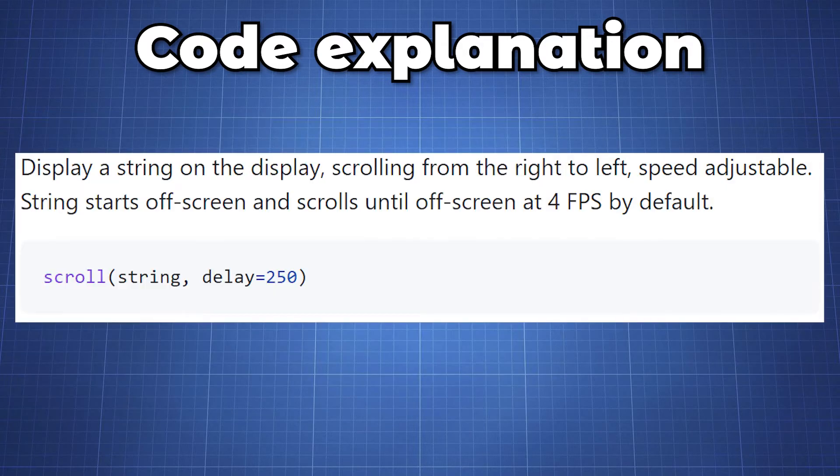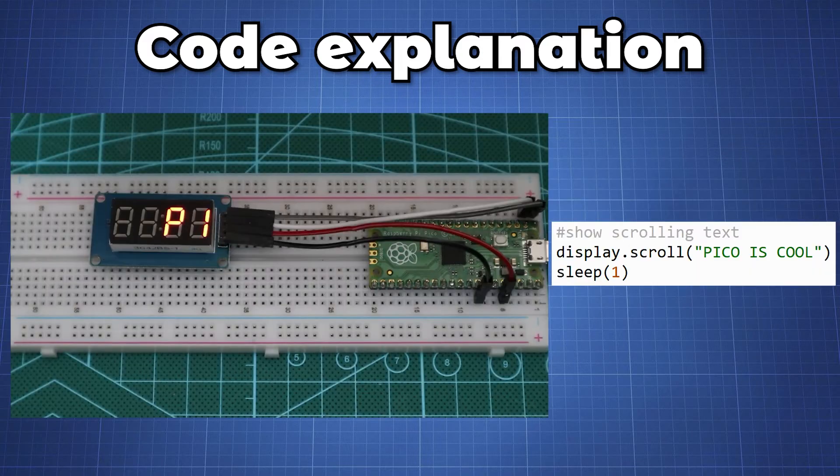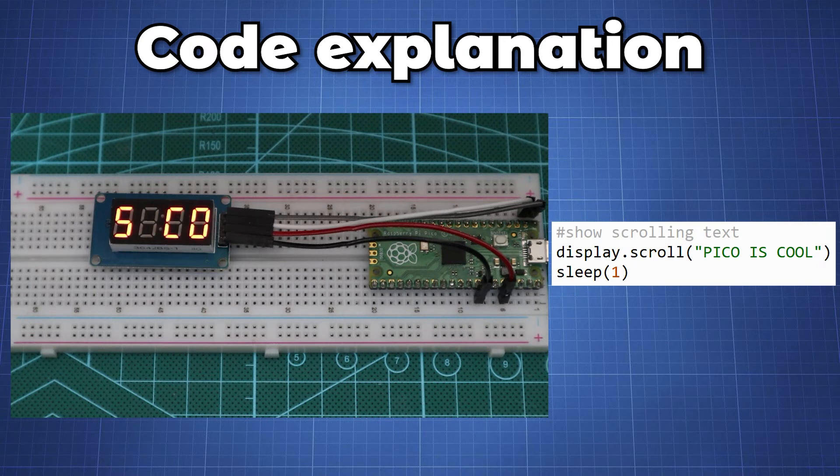The following method is a scroll method which will display a string on the display scrolling from right to left and the speed will be adjustable. To adjust the delay we can add the parameter delay which we pass the time delay in milliseconds. Here we display Pico is cool at the default frame rate.